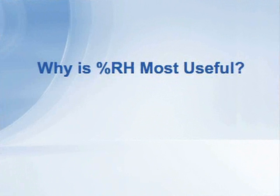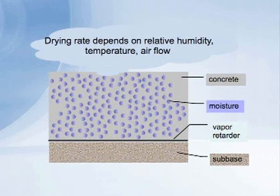Let's talk about why relative humidity is truly a useful technique. On this next slide, we see a schematic diagram of a concrete floor system. The gray area represents the concrete. There are little blue bubbles representing moisture in the slab.